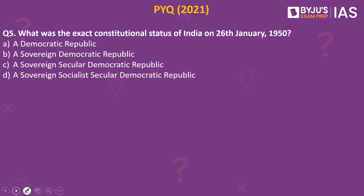Now let's look into the next practice question. What was the exact constitutional status of India on 26 January 1950 — a democratic republic, a sovereign democratic republic, a sovereign secular democratic republic, or a sovereign socialist secular democratic republic? The answer is a sovereign democratic republic. This is a previous year question from 2021. Originally, when the preamble was envisaged and discussed by the Constituent Assembly in 1949, it declared India as a sovereign democratic republic. Only in the 42nd Constitutional Amendment of 1976 were the two new words — socialist and secular — inserted into the preamble.